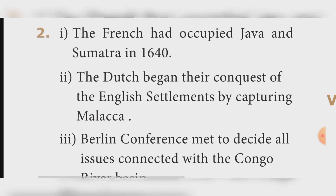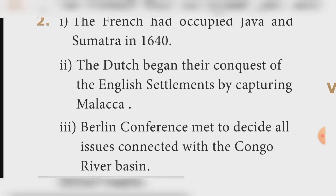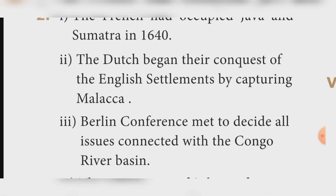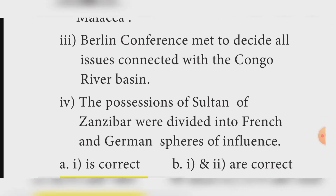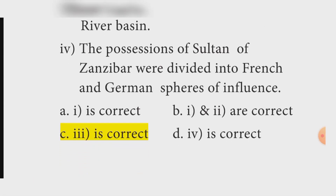Another set of statements: Statement two — The French had occupied Java and Sumatra in 1640. Statement three — The Dutch began their conquest of the English settlements by capturing Malacca. Statement three — The Berlin Conference met to decide all issues connected with the Congo River basin. Statement four — The possessions of the Sultan of Zanzibar were divided into French and German spheres of influence.